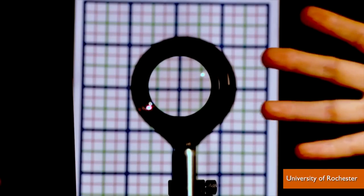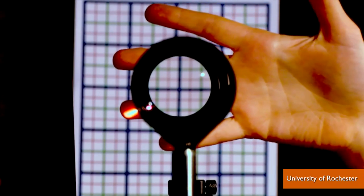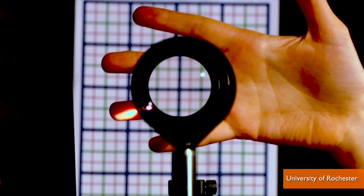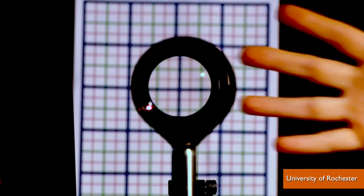Scientists at the University of Rochester in Rochester, New York, say they've not only come up with a way to hide large objects, they've done it using just four off-the-shelf lenses they bought for around $1,000.